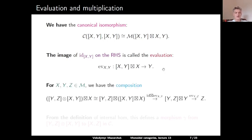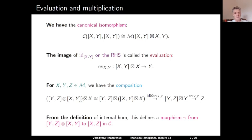We can compose evaluations: if X, Y, Z are objects in M, we start from X, act by [Y,Z] ⊗ [X,Y], use the associator mu to rearrange brackets, apply the identity on the leftmost factor and the evaluation map in brackets to reach [Y,Z]·Y, then evaluate to Z. By the adjunction from the internal hom definition, this morphism defines a multiplication map γ from [Y,Z] ⊗ [X,Y] to [X,Z] in C.